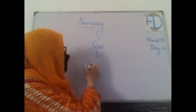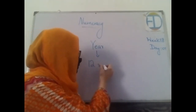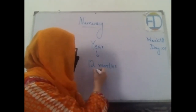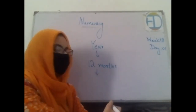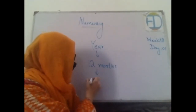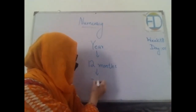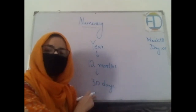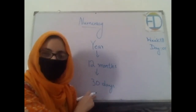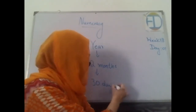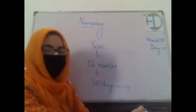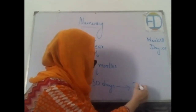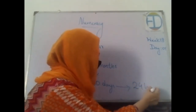How many months do we have in a year? Twelve months. Excellent. How many days do we have in a month? Thirty days. Very good. Now, this is the average term — sometimes we have thirty-one as well. How many hours do we have in a day? Twenty-four hours. Very good.